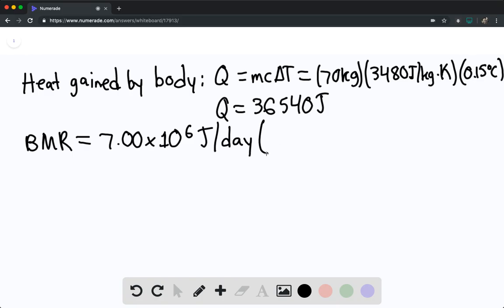Converting this to seconds: for every one day, there are 86,400 seconds. This becomes 81.0 joules per second.